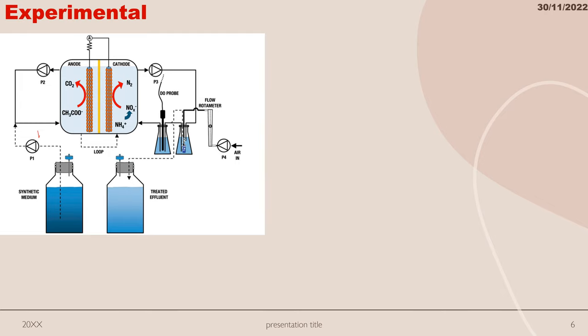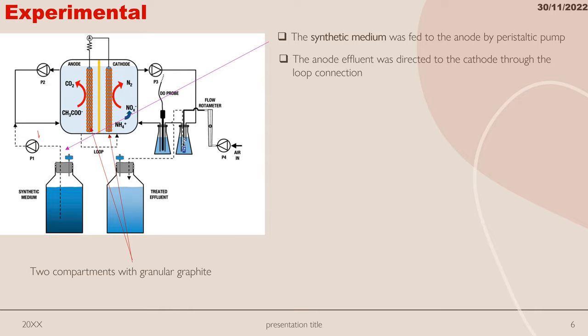Let's reconsider the figure first. There are two compartments, which are called anode and cathode, with granular shape. The synthetic medium was fed to the anode by peristaltic pump. The anode effluent, effluent means waste product, flowed to the cathode directly.